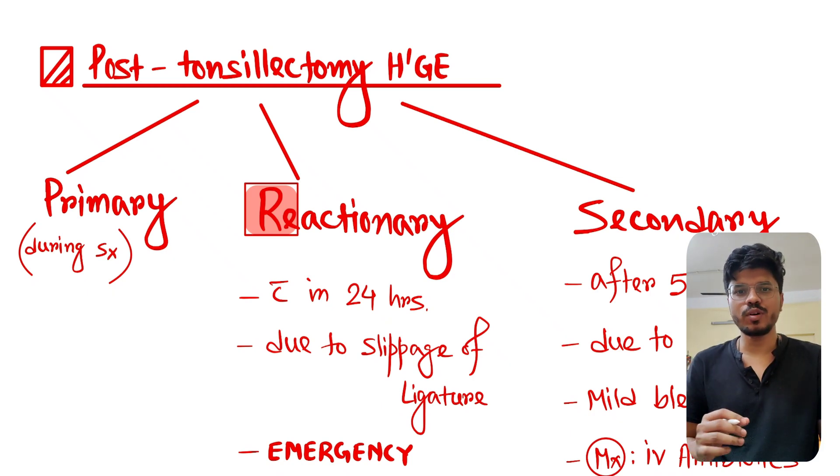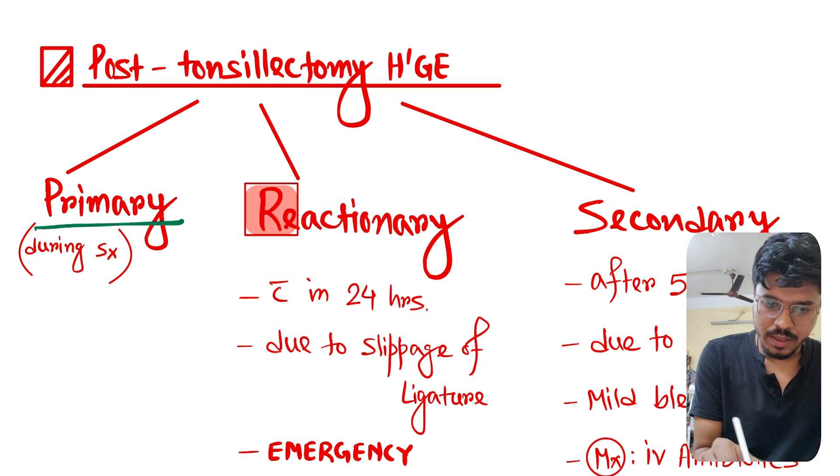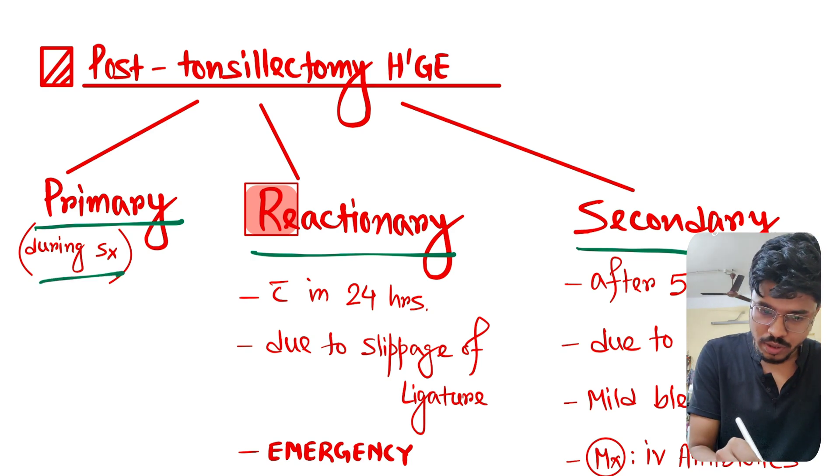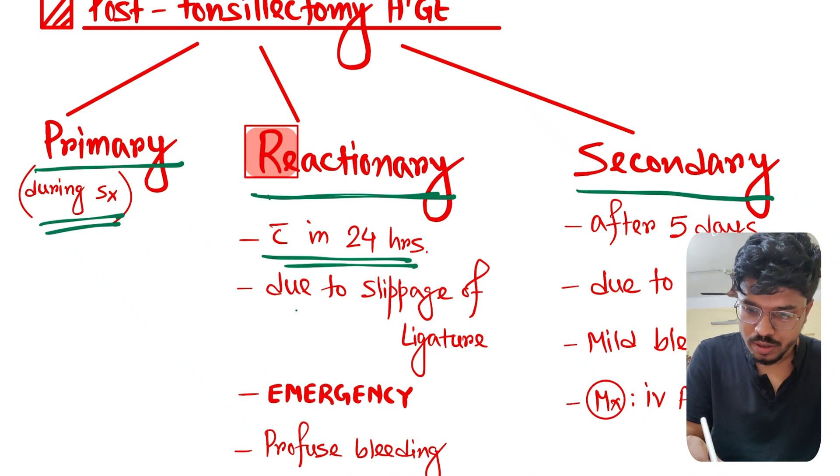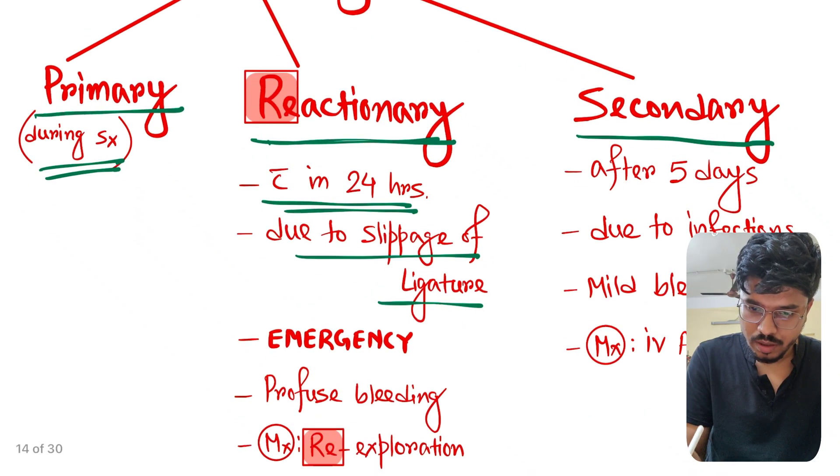Hi guys, in this video we talk about post-tonsillectomy hemorrhage. There are three types of post-tonsillectomy hemorrhage: primary, reactionary, and secondary. Primary means during surgery. Reactionary hemorrhage means within 24 hours due to slippage of ligature. This is an emergency condition.